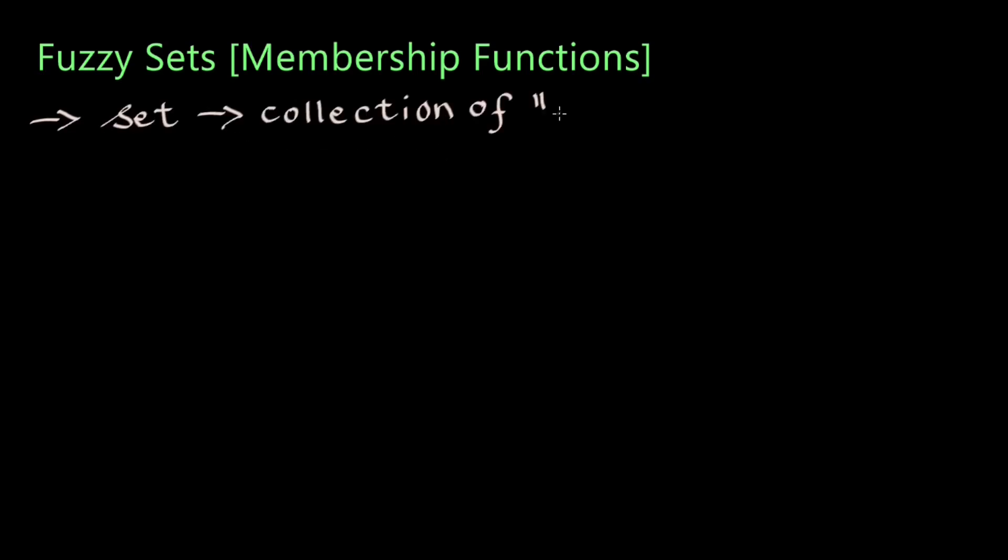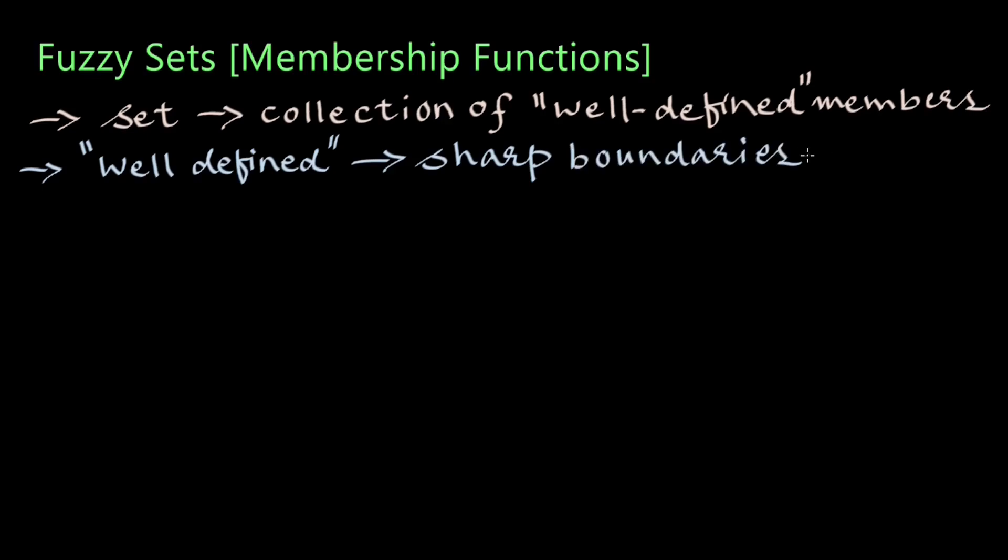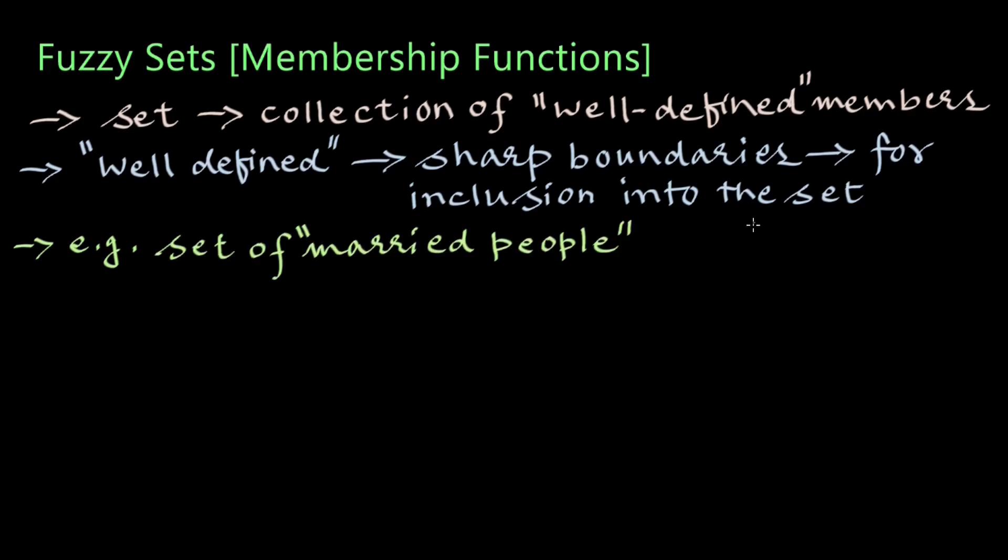In this video, we are going to study fuzzy sets or membership functions as they are called. By the term set, we understand a collection of well-defined members. Well-defined members have sharp boundaries for inclusion into the set. For example, a set of married people have sharp boundaries for its membership into the set, because a person is married or unmarried is a black and white case.